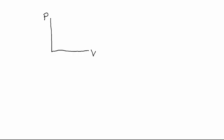A PV diagram is a graph of pressure versus volume, and we can represent the state of a system by a dot on the PV diagram. If we're talking about an ideal gas and we assume that n is constant, then PV equals nkT. So if you know P, V, and n, then you know what T is — T is determined by the location of that dot.